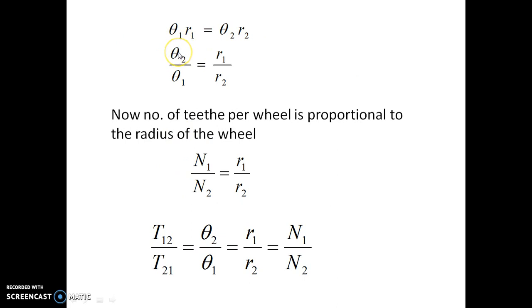Next, we got the relation with the radius. Now as we know, the number of teeth is proportional to the radius, so from that we can also get the third equation: N1/N2 equals r1/r2. So now if we accumulate all the relations, we got this relational equation.